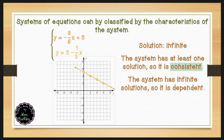To recap: if a system has at least one solution, it is consistent. If it has exactly one solution, it is independent. If it has infinite solutions, it is dependent.